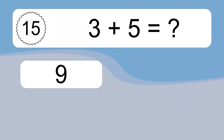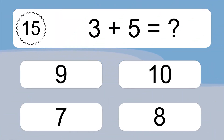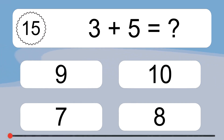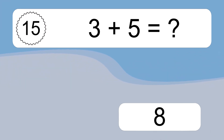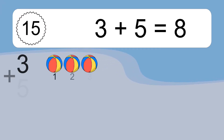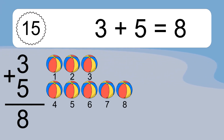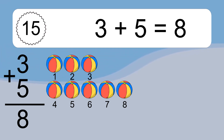3 plus 5 equals what? 3 plus 5 equals 8. Let's count it: 1, 2, 3, 4, 5, 6, 7, 8.